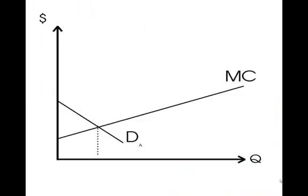Now why are public goods provided by the public sector? We're going to look at this theoretically using a very simple case. Imagine there's an island with two people, Al and Betty, and they both want to build parks. There's a park building company with an upward sloping marginal cost curve — the more park that is produced, the more it costs for each additional square foot. Al has a downward sloping demand, or marginal willingness to pay curve. In a perfect market, we'd have an equilibrium quantity indicated by the dotted line.